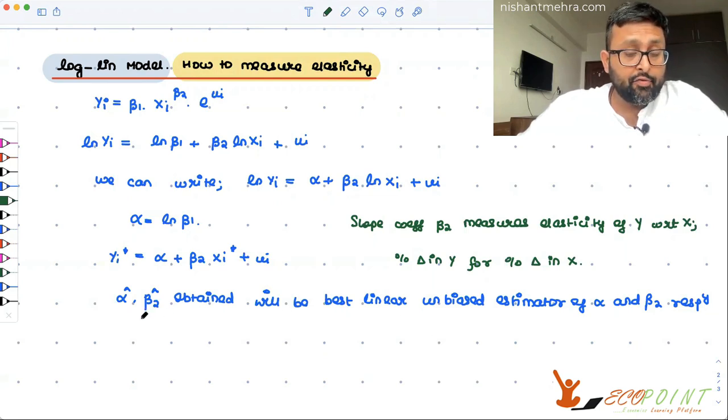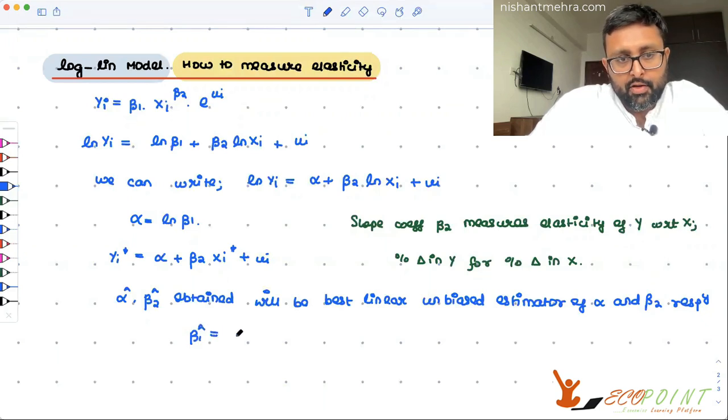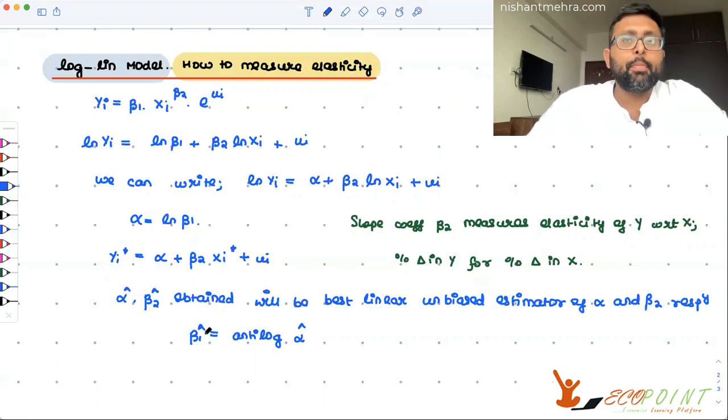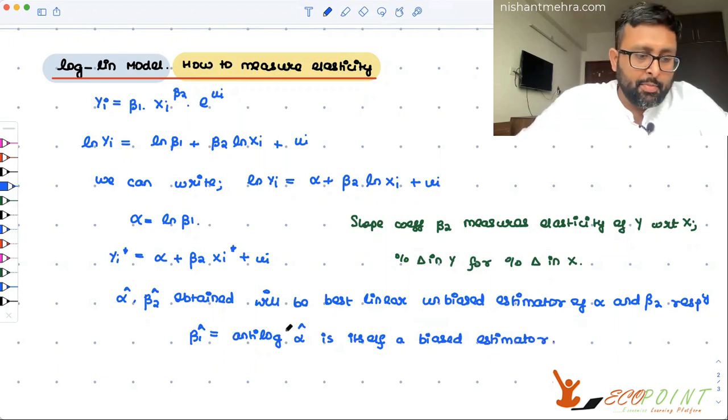But the point is, I've told you this earlier also, that alpha hat is the unbiased estimator for alpha. But when you change alpha back into beta 1, alpha hat is not the unbiased estimator of beta 1. When you estimate, because alpha equals log of beta 1, you get beta 1 hat as antilog alpha hat. This beta 1 hat is itself a biased estimator.